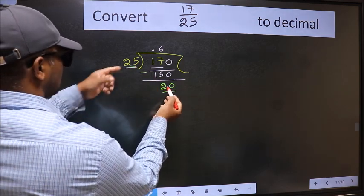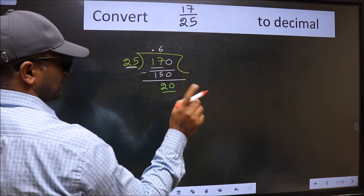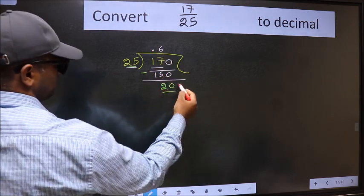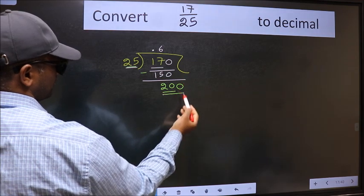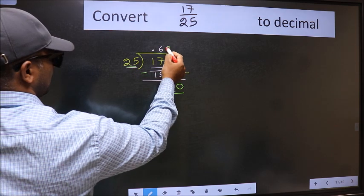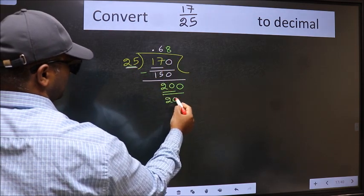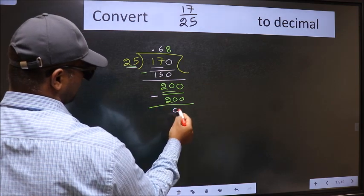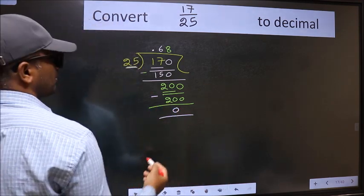20 is smaller than 25, and we already have the decimal, so this time we can directly take 0. So 200. When do we get 200 in the 25 table? 25×8=200. Now we should subtract. We got 0.